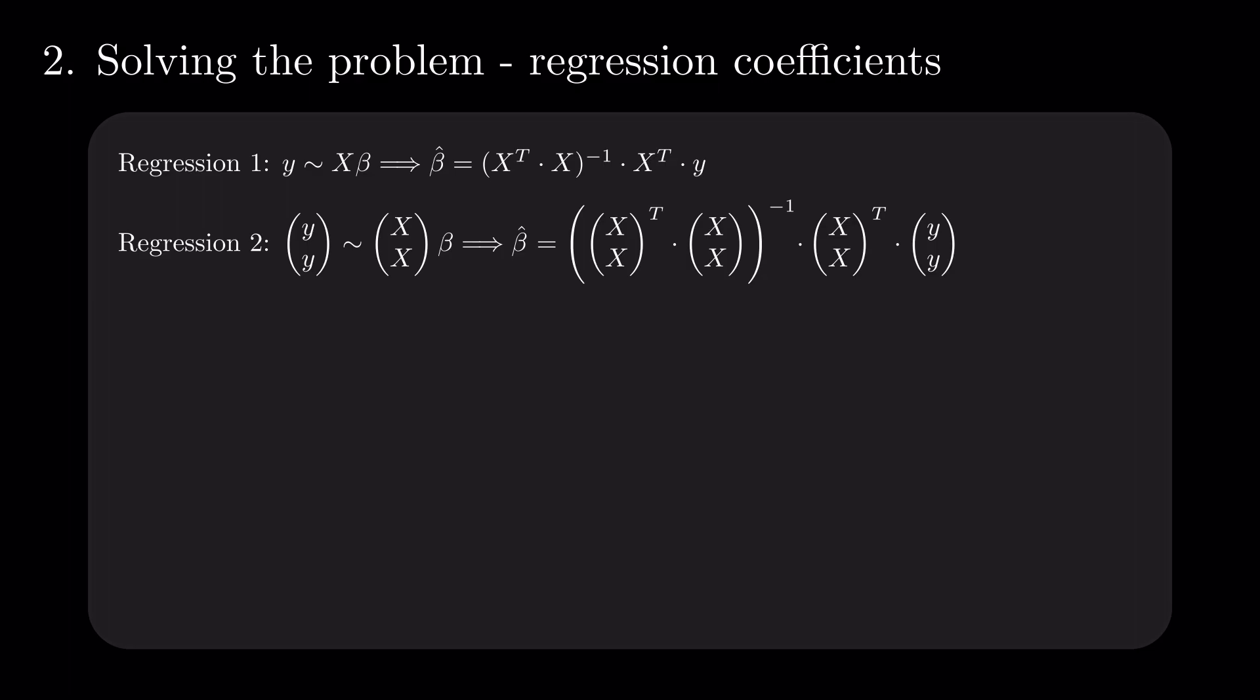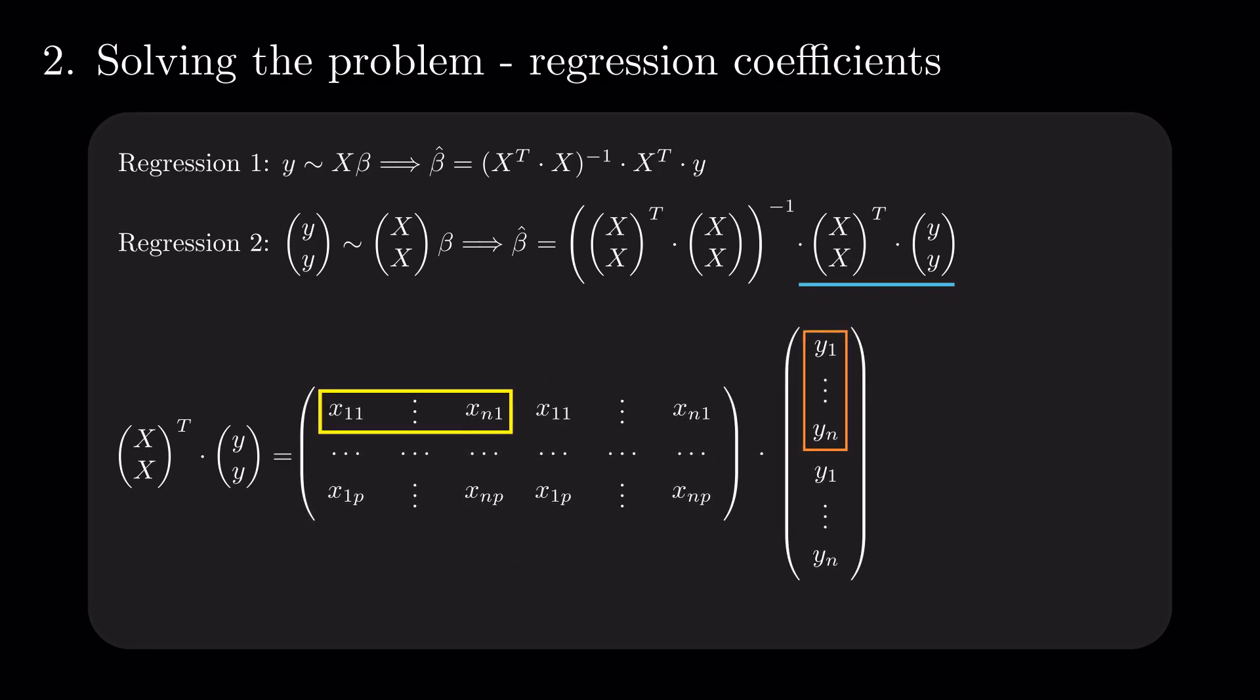Using matrix multiplication rules, compute the product of the last two terms, since matrix multiplication is associative. Each element is double the corresponding one in the matrix x transpose y, producing a change in the formula for the first regression.